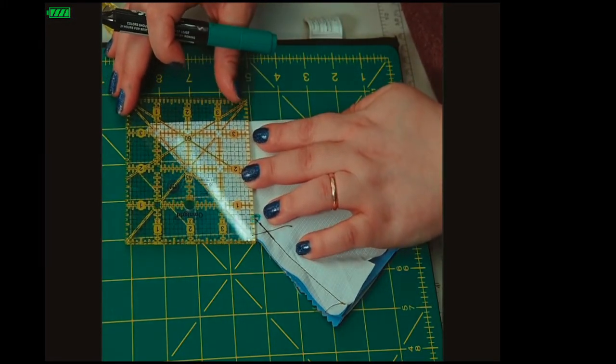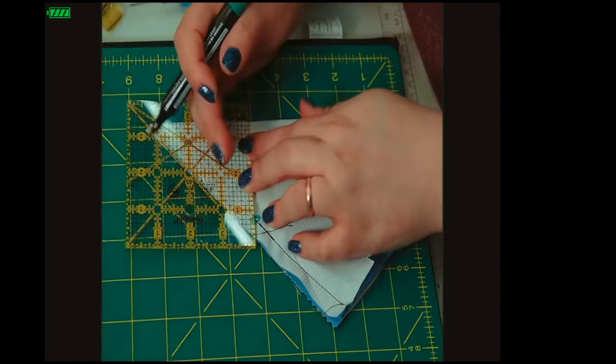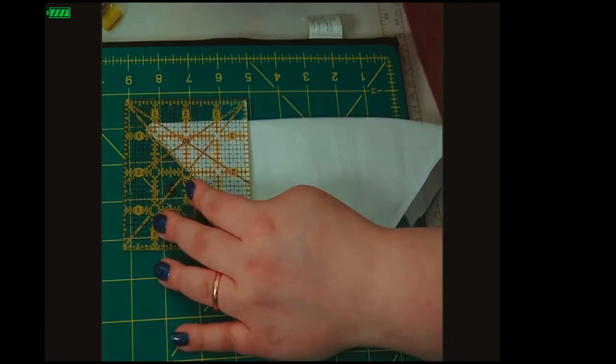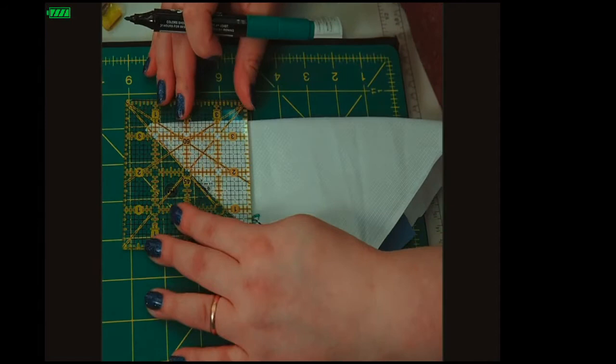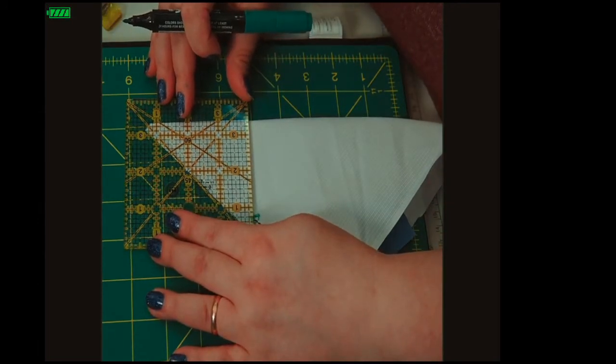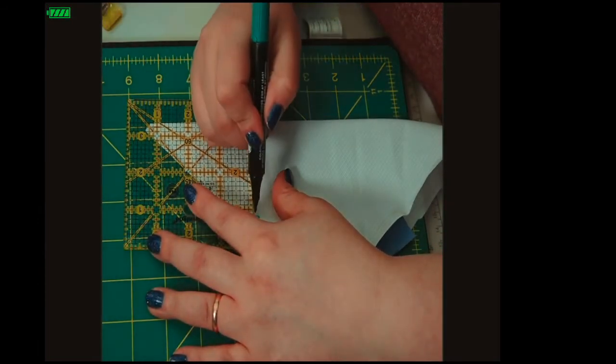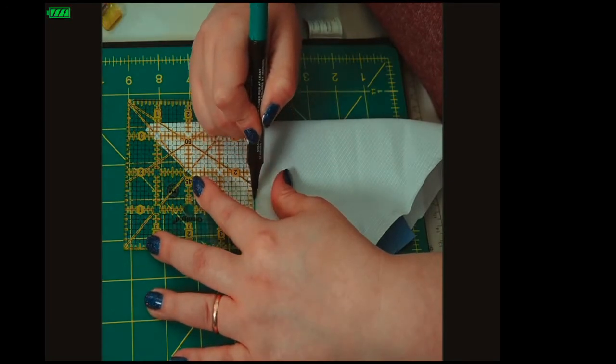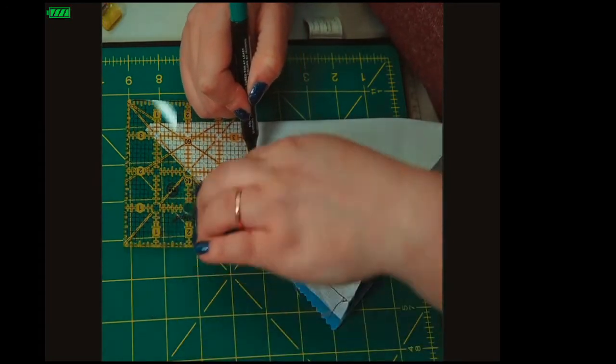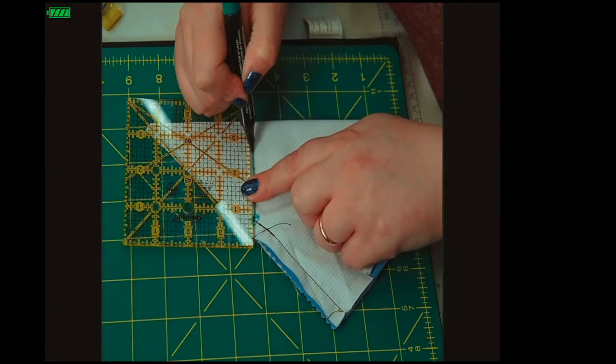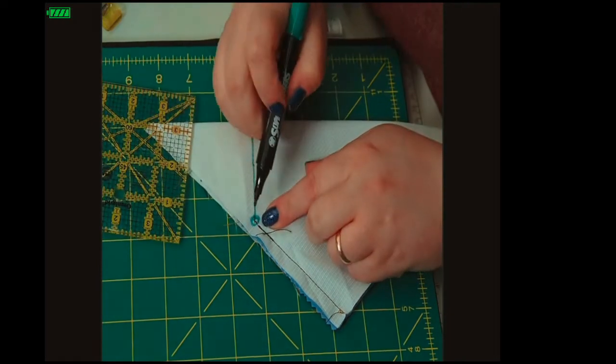And you're just matching up—you're going to be drawing. You're going to be using the 45-degree angle and you're going to draw a line from where the previous stitches went down.